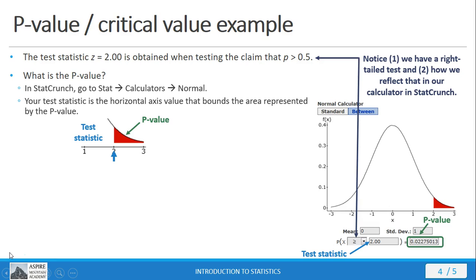So, the p-value is the area bounded by the test statistic. The critical value is the boundary for the area that is the significance level, alpha. Okay? So, they're similar, but they're not the same animal.